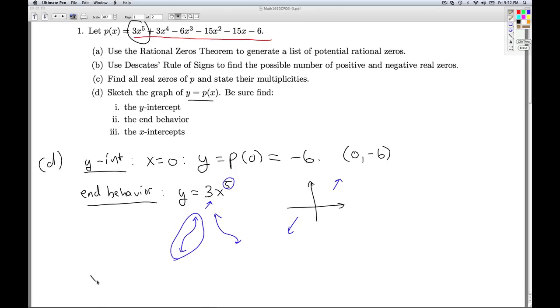Now, as far as the x-intercepts are concerned, that was the whole point of finding the zeros. So we know that x equal 2 is a zero of multiplicity 1, so we're going to have an x-intercept of 2, 0. And since the multiplicity was 1, it's going to cross here. The other zero was at negative 1, so we have an x-intercept of negative 1, 0. And since the multiplicity there was 2, it's even, it's going to touch. So now I'm going to put all this information together and hopefully make a nice, pleasing graph.